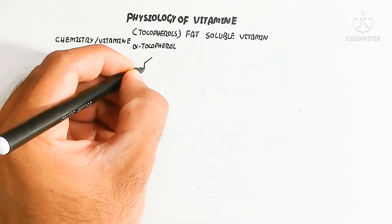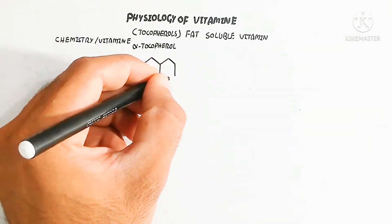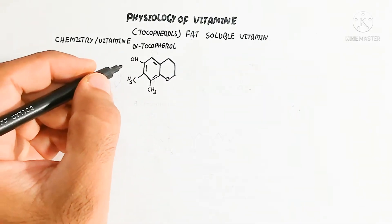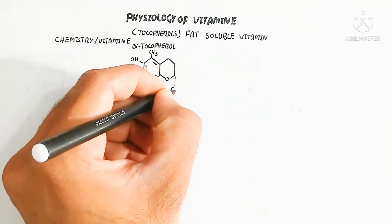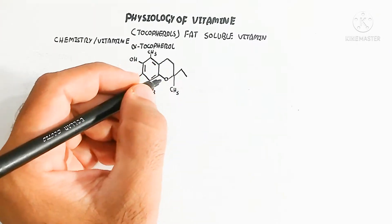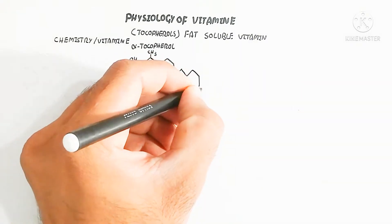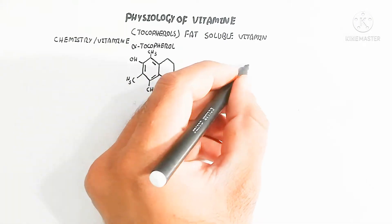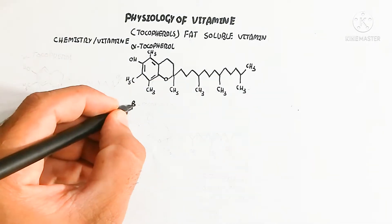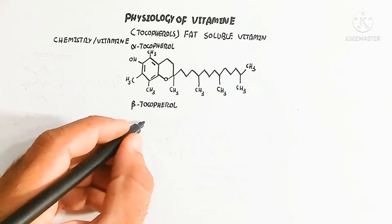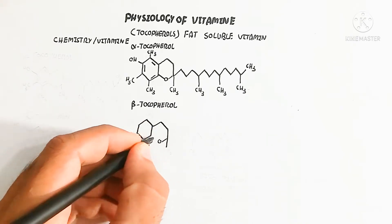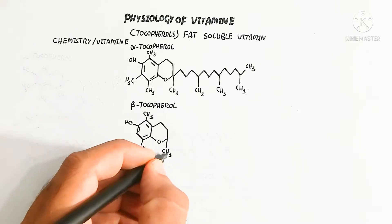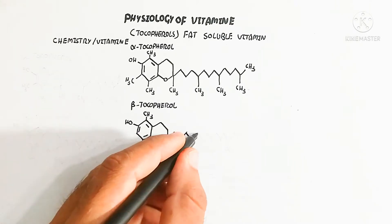Vitamin E is a class of different molecules with the same core structure but different functional groups. Here is the structure of alpha-tocopherol, which contains methyl groups and a hydroxyl group at carbon numbers five, six, seven, and eight.